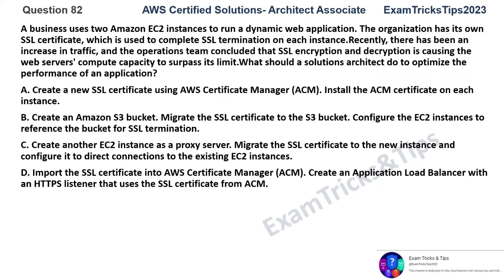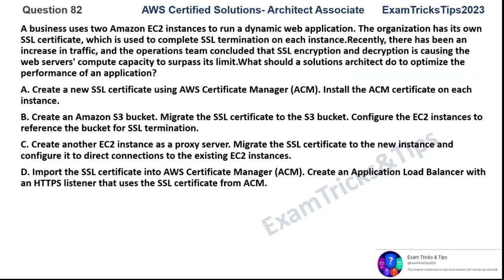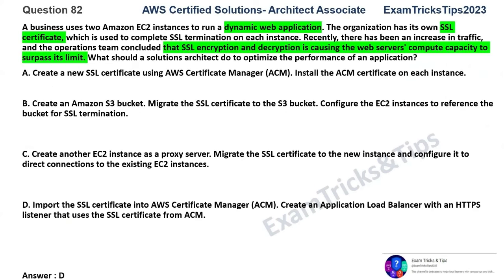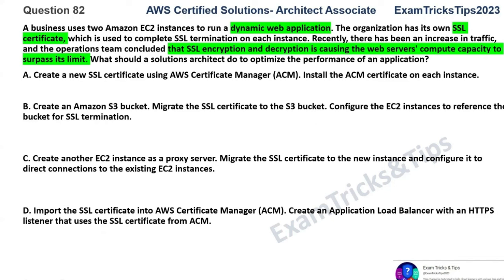Question number 82. A business uses two Amazon EC2 instances to run a dynamic web application. The organization has its own SSL certificate, which is used to complete SSL termination on each instance. Recently there has been an increase in traffic, and the operations team concluded that SSL encryption and decryption is causing the web server compute capacity to surpass its limit. What should a solution architect do to optimize the web performance of the application?